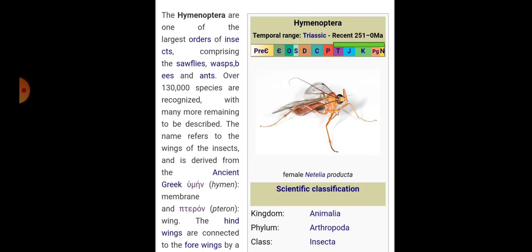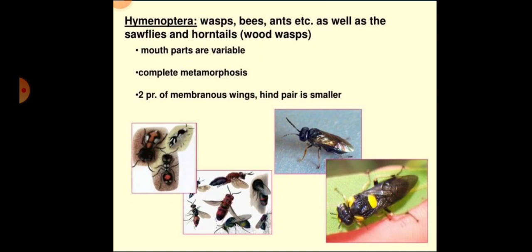The head of Hymenoptera is free, mobile, and hypognathous. Antennae are geniculate, clavate, filiform, or pectinate, and 4-segmented to 70-segmented. Sexual dimorphism is shown by antennae: 13 segments in males and 12 in females in Apoidea and Vespoidea. Eyes are well developed except in some ants where they are atrophied. Ocelli are 3, but sometimes absent as in the case of ant workers.